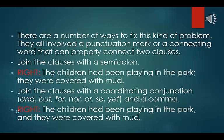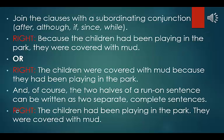There are a number of ways to fix a run-on sentence. Join the clauses with a semicolon — right: the children had been playing in the park; they were covered with mud. Join the clauses with a coordinating conjunction (and, but, for, nor, or, so, yet) and a comma — right: the children had been playing in the park, and they were covered with mud. Join the clauses with a subordinating conjunction (after, although, if, since, while) — right: because the children had been playing in the park, they were covered with mud. Or the two halves can simply be written as two separate complete sentences: the children had been playing in the park. They were covered with mud.